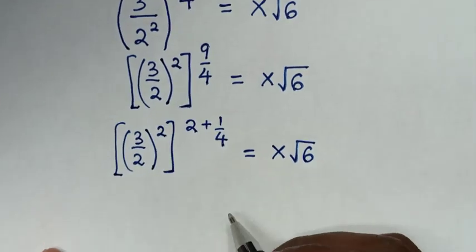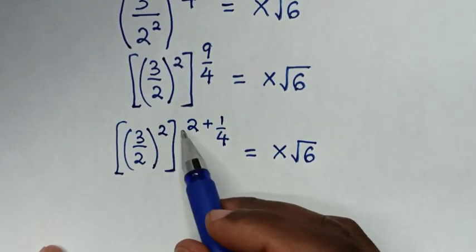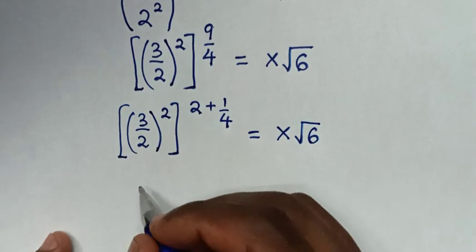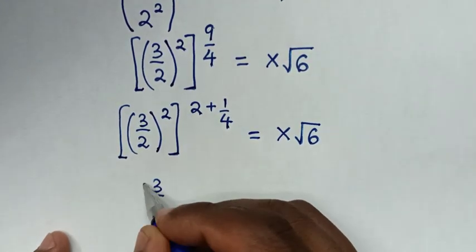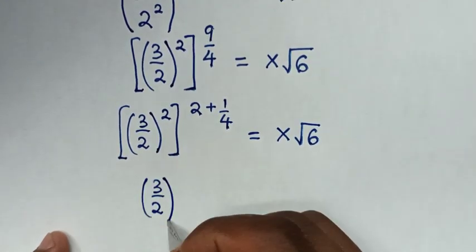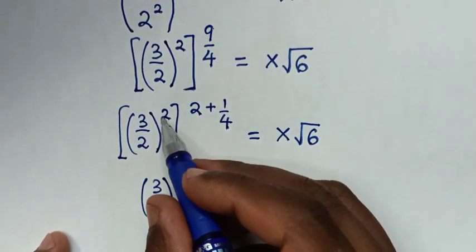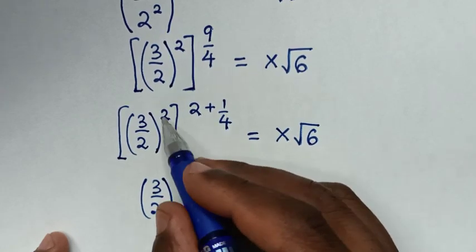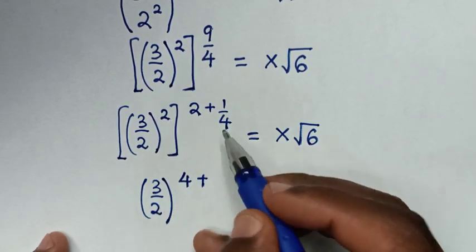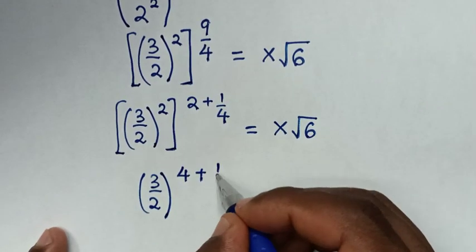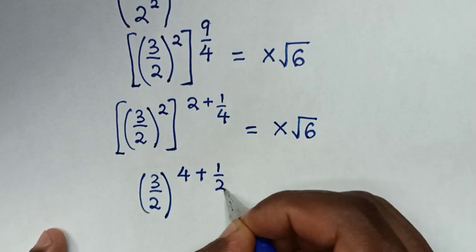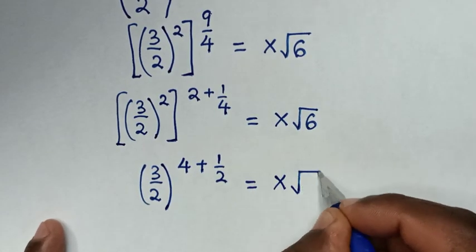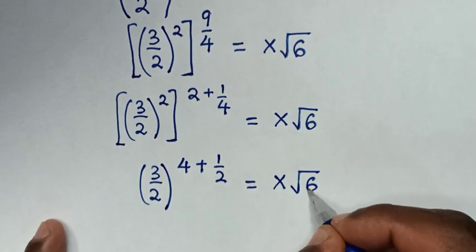Then in the next step, we take this power of 2 outside the bracket, so it will be (3 over 2) bracket. Then 2 times 2 is 4, plus 2 times 1 over 4 is 1 over 2. So the exponent becomes 4 plus 1 over 2, giving (3 over 2)^(3 over 4), equal to x square root of 6.